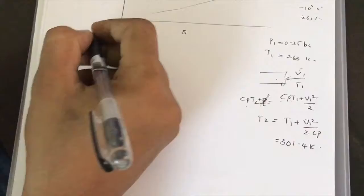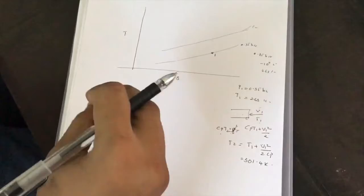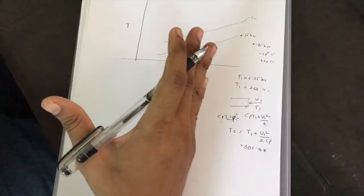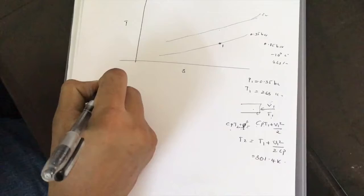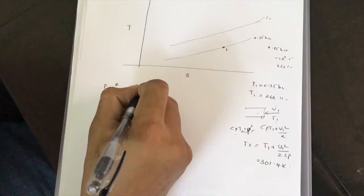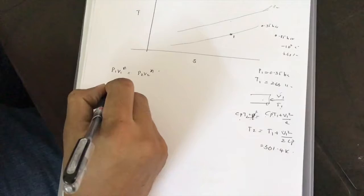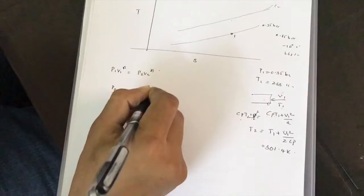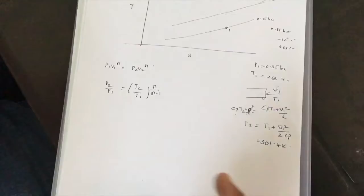We have obtained T2 = 301.4 K. Since the ramming process 1 to 2 is adiabatic (no ram efficiency is given), we use the adiabatic formula P2/P1 = (T2/T1)^(γ/(γ-1)) to find P2.